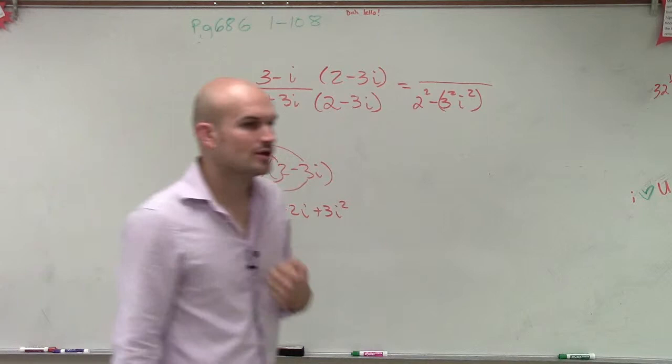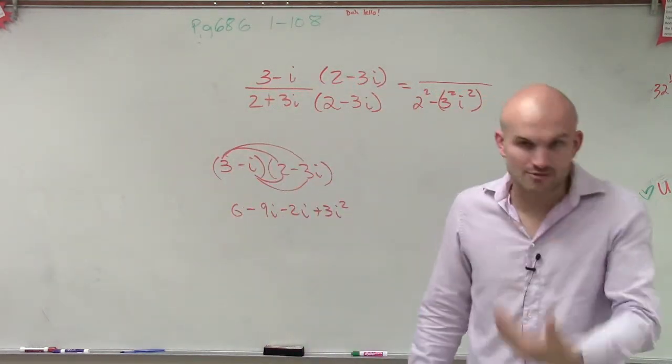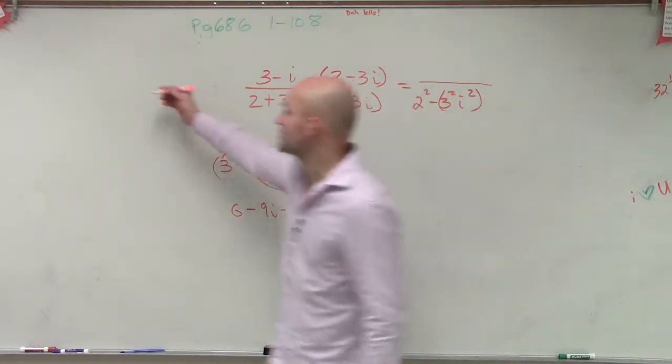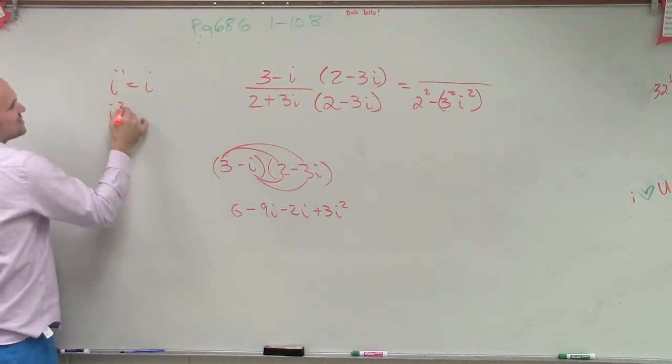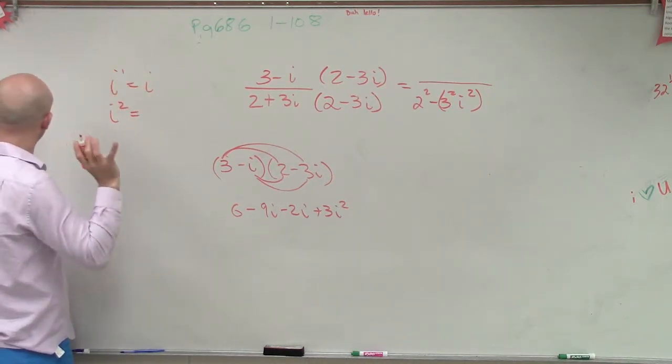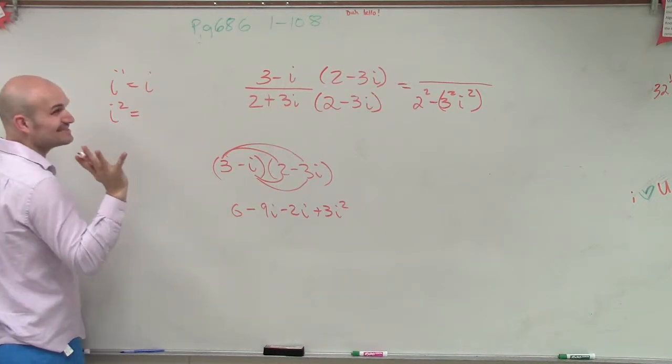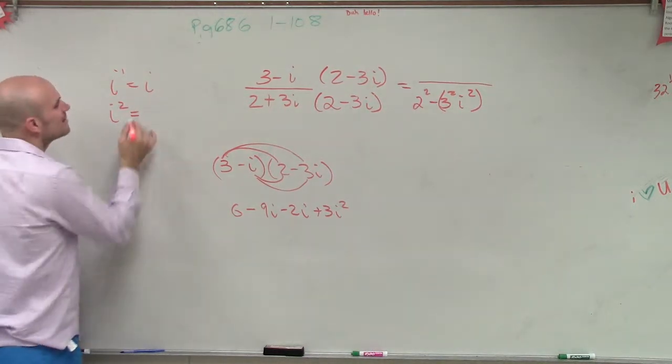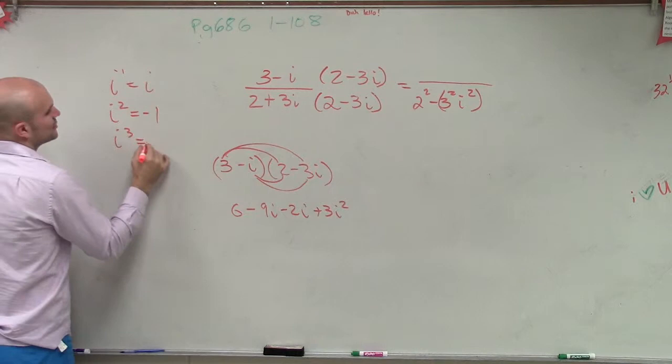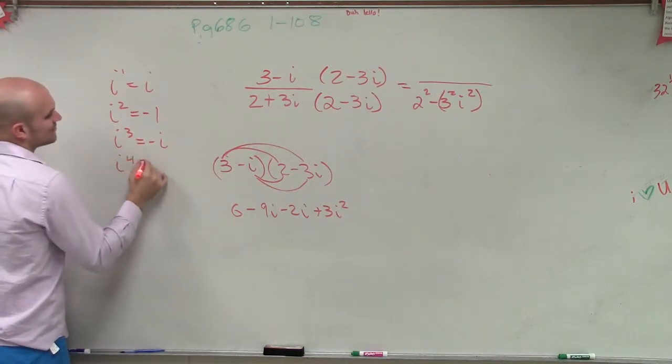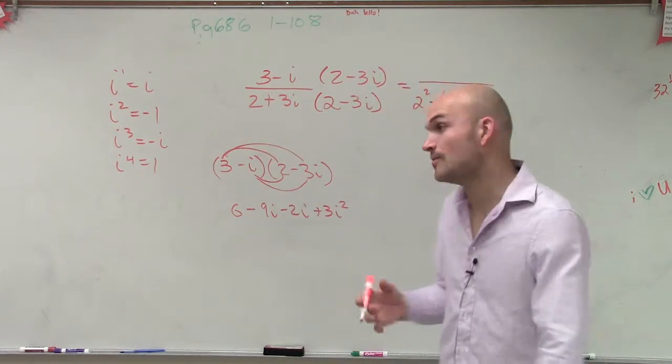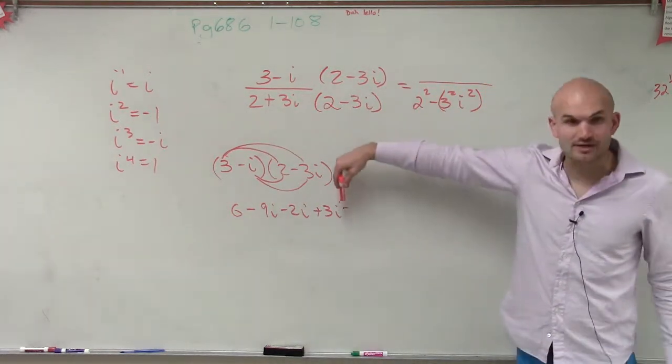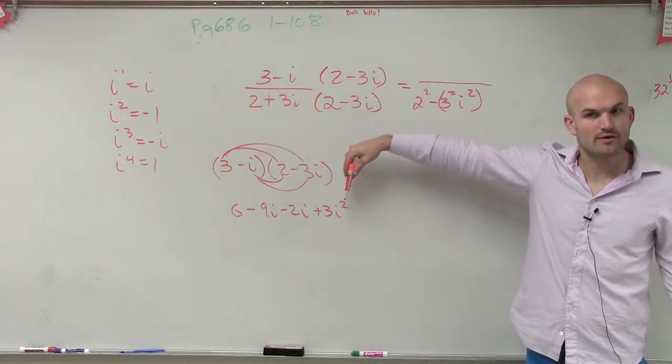Now, the important thing to look at this when we're doing this, remember our imaginary numbers. We talked about this. i to the first power equals i. i squared equals negative 1. i cubed equals negative i. i to the fourth equals 1. I told you, those first four terms are going to be very important for you to know. Because now we look at i squared, and we have a negative 1, right?